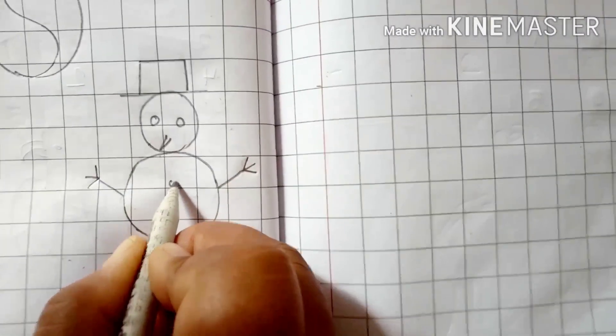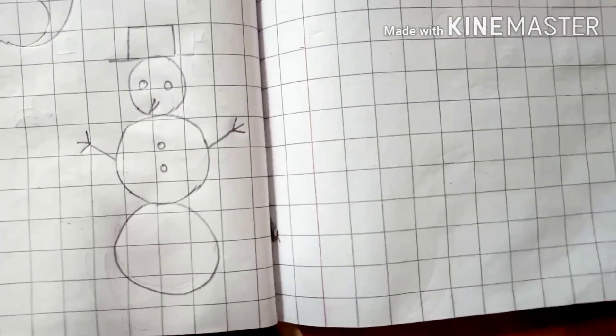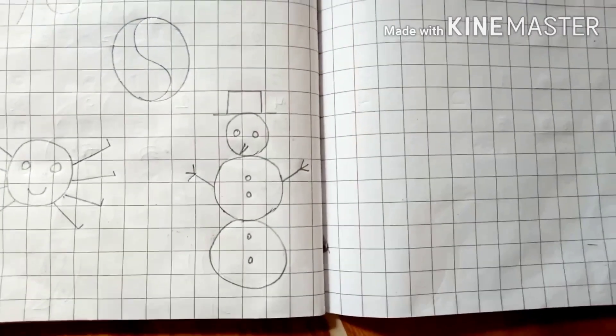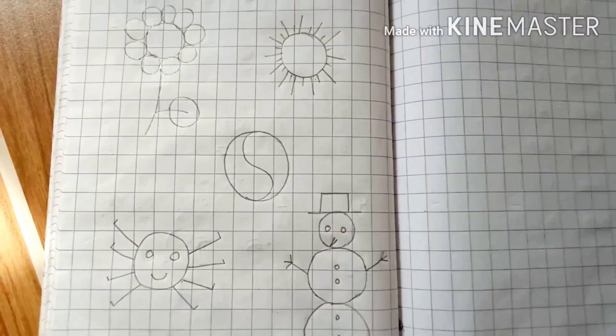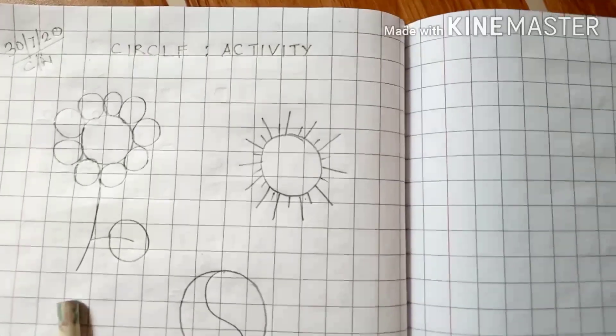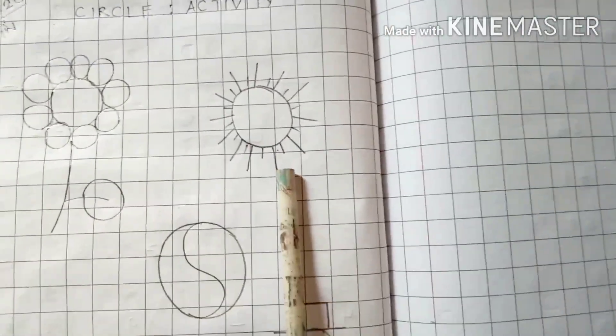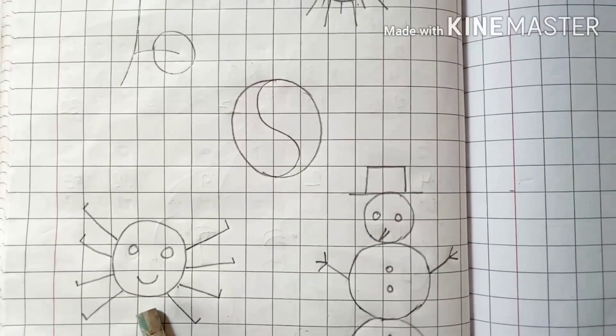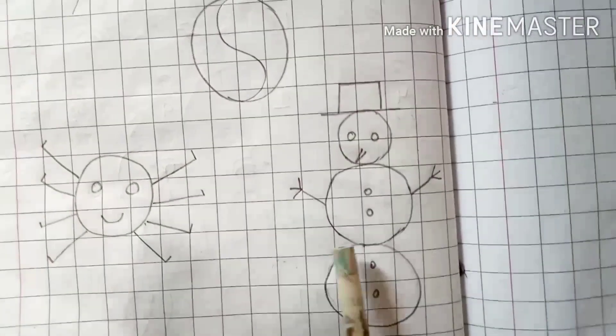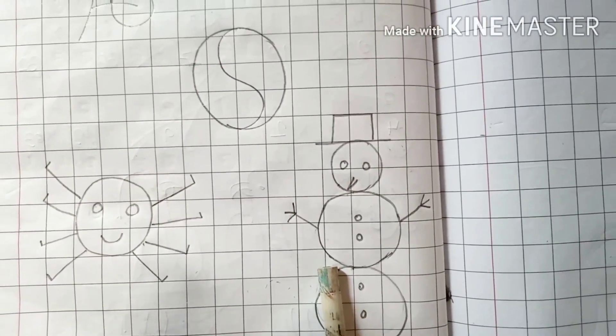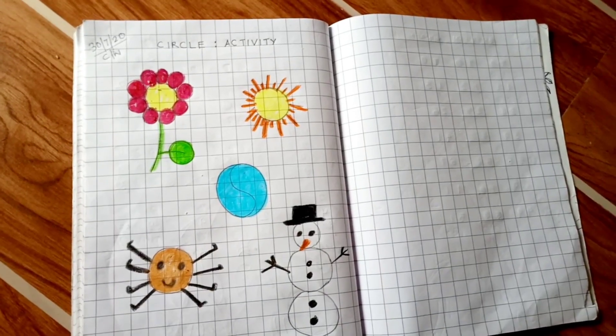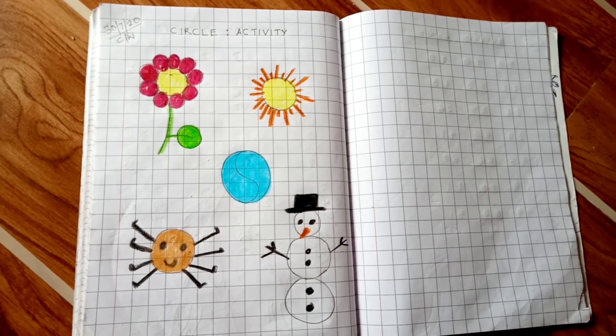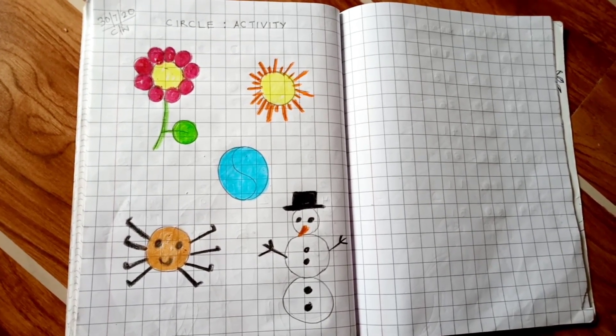Isn't it cute? I hope so. We are done. So, with the help of circle, we have made a flower, a sun, a ball, a spider, and snowman. And I have colored this in this way. You can use your own creativity. Thank you. Bye-bye.